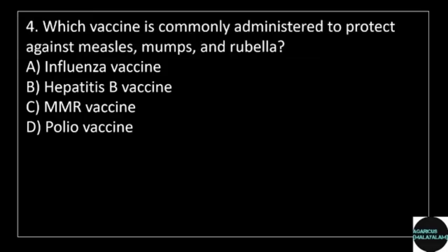4th question: Which vaccine is commonly administered to protect against measles, mumps, and rubella? Answer options: option A, influenza vaccine; option B, hepatitis B vaccine; option C, MMR vaccine; option D, polio vaccine.